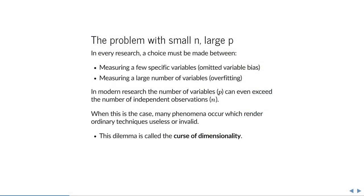In every research project we face a choice: either measure a few specific variables thought most important for the response, risking omitted variable bias and confounding, or measure a very large number of variables, which is almost guaranteed to overfit. Finding the right number of variables and which ones is the central challenge. Especially in omics fields, the number of variables can easily exceed the number of independent observations. This choice — few variables with omitted variable bias versus many variables with many complex problems — is called the curse of dimensionality.